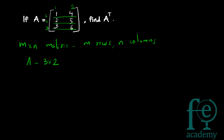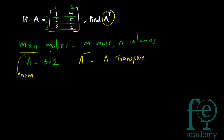You are asked to find A transpose, written as A raised to T. A raised to T represents A transpose. For any matrix A, the transpose is obtained by interchanging the rows and columns — rows are converted to columns and columns are converted to rows. So an m cross n matrix will be converted to an n cross m matrix. In this case, the 3 cross 2 matrix will be converted to a 2 cross 3 matrix, so A transpose will have 2 rows and 3 columns.